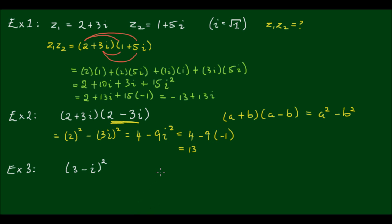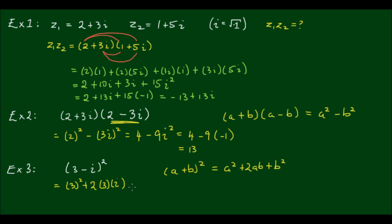In the third instance, we can follow the laws of binomial expansion. Whenever we have a plus b squared, we end up with a squared plus 2ab plus b squared. So if we follow this formula, we have 3 squared plus 2 times 3 times negative i — that is, because we have a minus i — and then plus negative i squared.